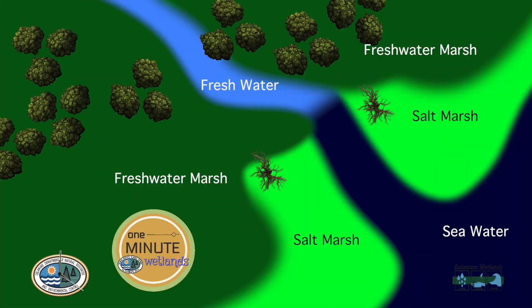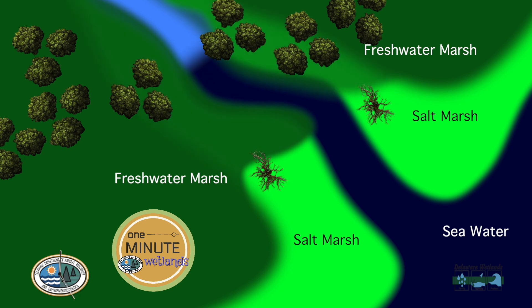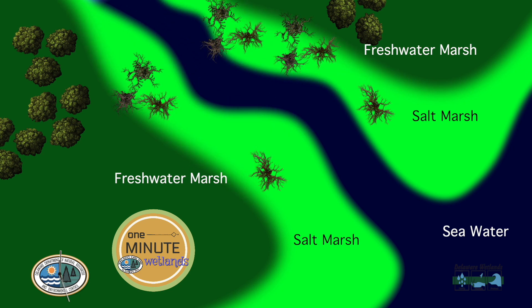One of the ways this can happen is through sea level rise. As sea levels rise, water begins to go into areas that were upland, originally freshwater, even further upstream into rivers. Just like you, plants care about how much salt is in their water. As sea levels rise, freshwater plants become stressed and die off, but this allows salt-loving plants to move in and colonize.